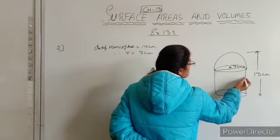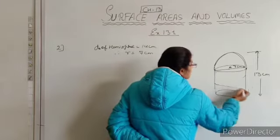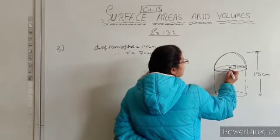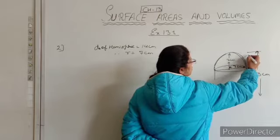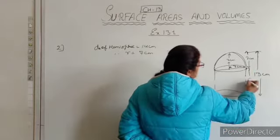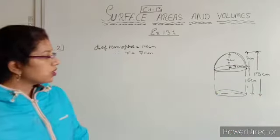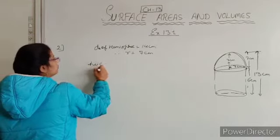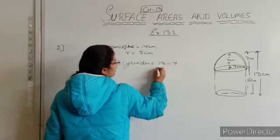The inner surface area means curved surface area of the cylinder plus the curved surface area of the hemisphere. The radius of the hemisphere is 7 cm, so that same 7 cm is the radius of the cylinder too. The height of the cylinder is the total height minus the radius of the hemisphere: 13 minus 7 equals 6 cm. So height of cylinder equals 6 cm.